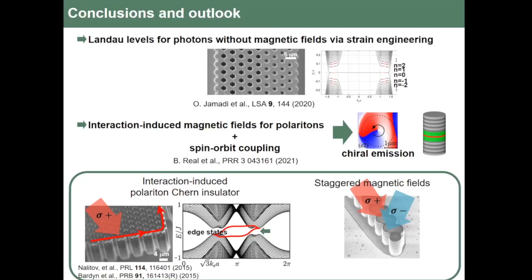A follow-up question addresses two scenarios: first, lasing in Landau levels with spontaneous vortex formation from symmetry breaking; second, in an unstrained graphene lattice with Dirac cones, adding a Zeeman-like Seeman effect — either via external magnetic field or reservoir engineering — opens a gap at the Dirac cones (a topological gap), producing edge states. Chiral pumping is achieved simply with a quarter-wave plate.